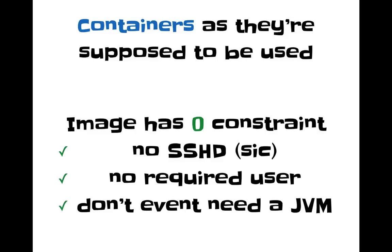We really think that we use containers the way they are supposed to be used: to run isolated processes and let them communicate the way we want them to. And the main benefit from a user point of view is that you don't have any constraint on the Docker image you want to use for your build. You don't need to include an SSH daemon. You don't need to have a specific user set. You don't need to have a JVM installed on your Docker image. For example, if you are a PHP, Ruby, or whatever language developer, you don't care about having Java installed — so don't bother with that.